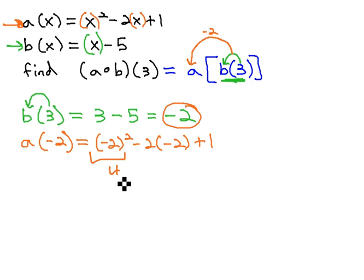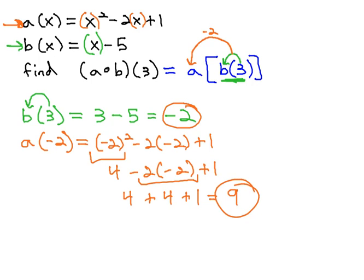Well, (-2)² is 4 minus 2 times -2 plus 1. Multiplying next, we get 4 + 4 + 1, and 4 + 4 + 1 is 9. So we would say the composition a∘b(3) is equal to 9, because we first plug 3 into the b, and then plug the answer of -2 into a.